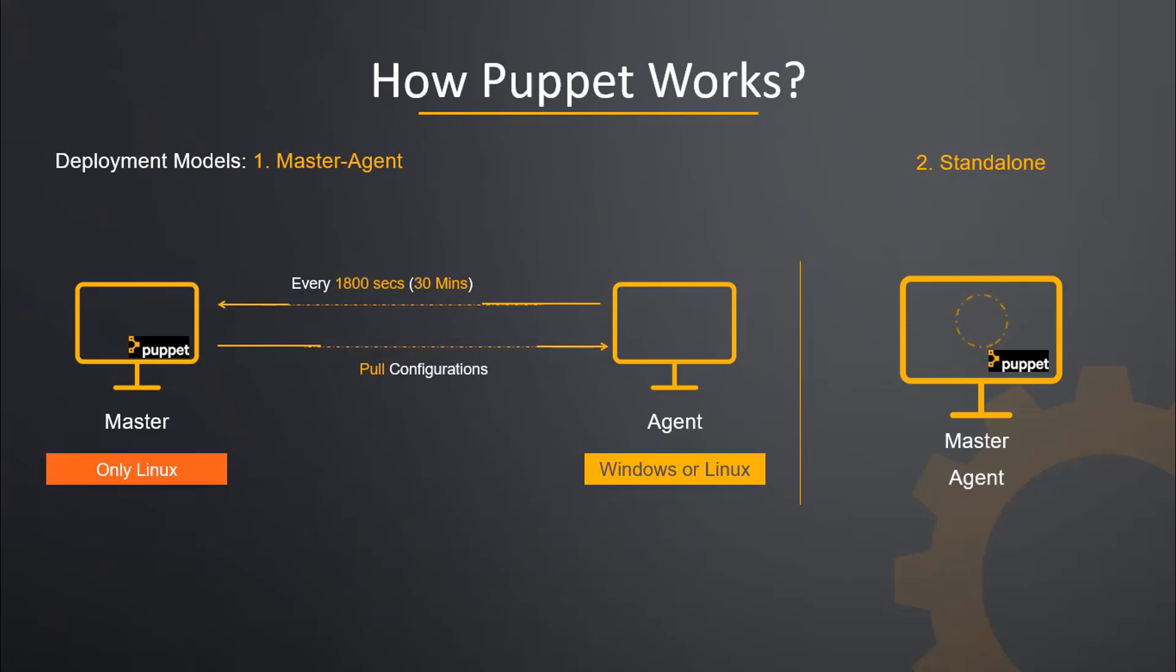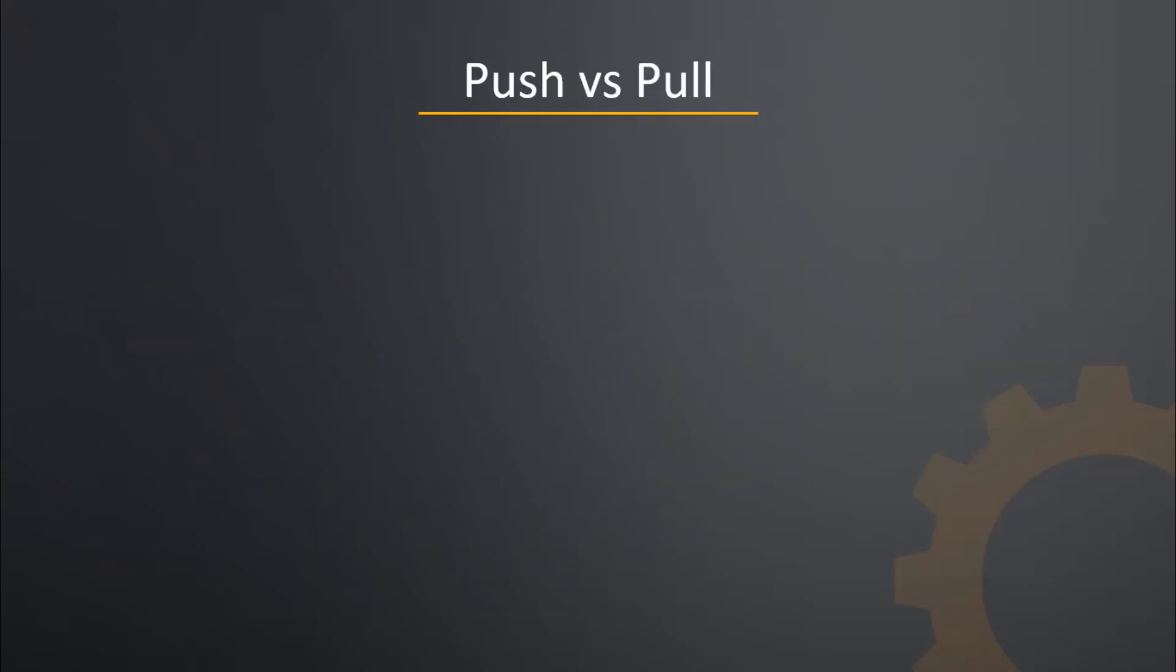The other Puppet deployment model is Puppet self-contained server, which acts as a master and agent on a single host. The master-agent deployment model is used for production use cases, whereas the standalone is used for developing Puppet modules or for testing or POCs.